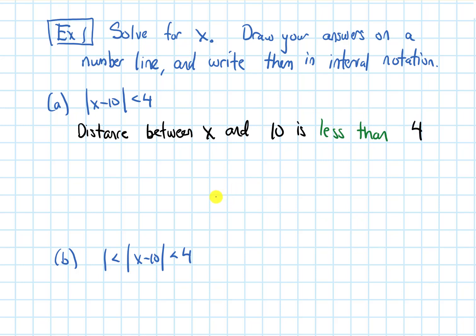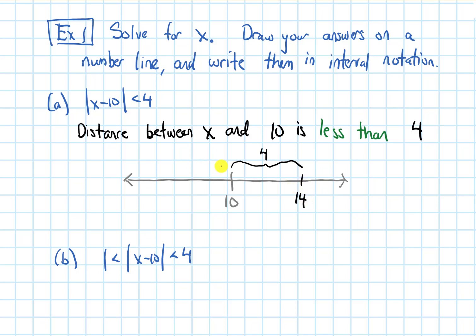Let's depict this on a number line. It's talking about the distance between some unknown number x and 10, so let's put 10 on the number line. Whatever x is, the distance between x and 10 has to be less than 4. If I go 4 to the right, that puts me at 14. If I go 4 in the other direction, that puts me at 6. So x can be less than a distance of 4 away from 10.